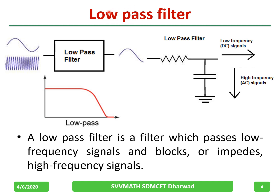In the block diagram, both higher and lower frequencies are given as input, but the output passes only the lower frequencies. The circuit for a low pass filter uses R and C. As we know, a capacitor blocks DC and allows AC — therefore higher frequencies are grounded and lower frequencies are passed through.